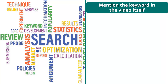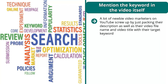Mention the keyword in the video itself. A lot of newbie video marketers on YouTube screw up by just packing their description, video file name, and video title with their target keyword. That is spam. You can mention your target keyword in your title once, and then maybe a related keyword in the subtitle. Don't overdo it. Don't stuff the description or title of your video with keywords.